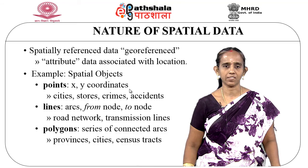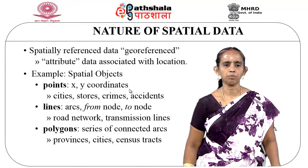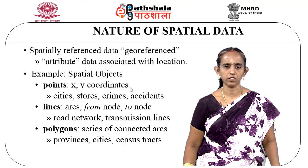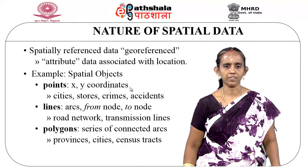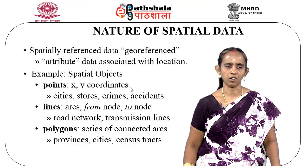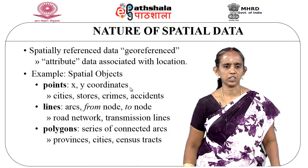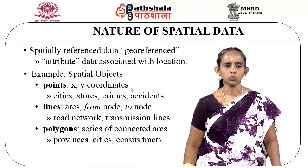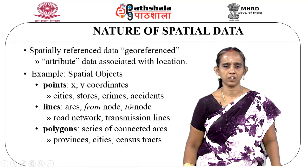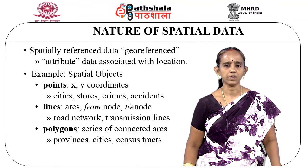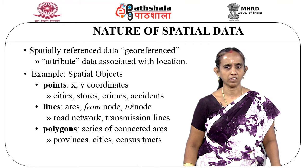The next representation form is a line form. These line forms are represented as arcs from one source node to the destination node. Examples of this kind of representation are road networks or transmission lines, which can be represented in the form of arcs or lines. The next kind of representation is a polygon, which is a series of connected arcs. Using these polygons it is possible to represent provinces, cities, or census tracts.